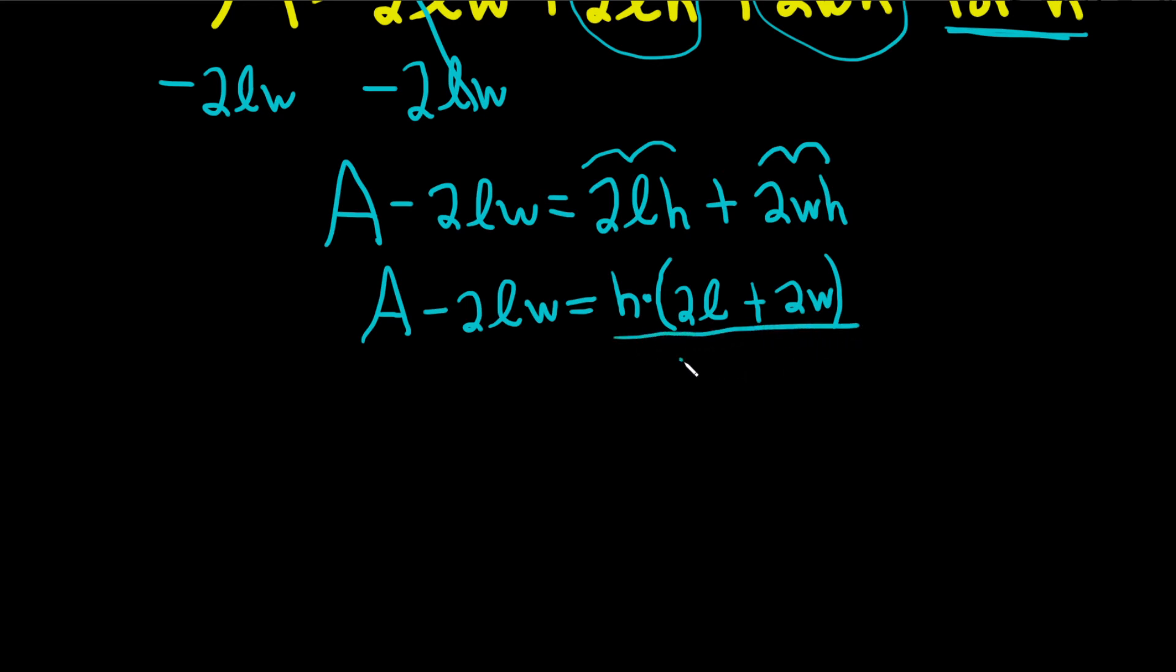I'm going to draw a giant line and put a 2L plus 2W. Draw a giant line and put a 2L plus 2W. So we have A minus 2LW over 2L plus 2W, and that's equal to H.